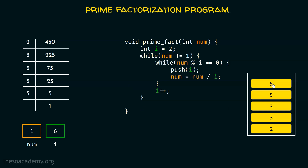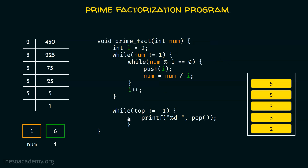Now we have to print all the elements of the stack. For this purpose, we need a while loop checking: if top is not equal to -1 — in other words, if the stack is not empty — then print the element returned by the pop function. The pop function will always return the topmost element of the stack. In this way, we are able to print all the prime factors of a given number in descending order.